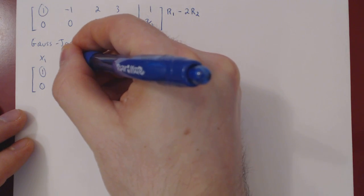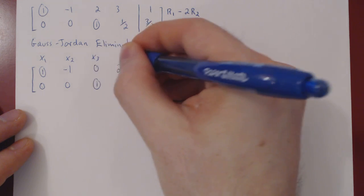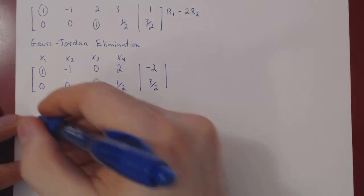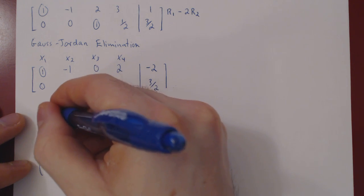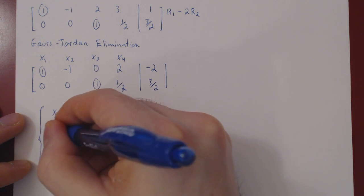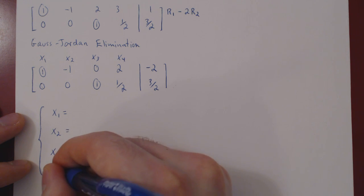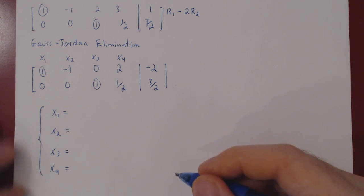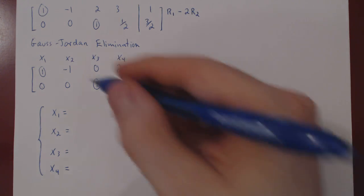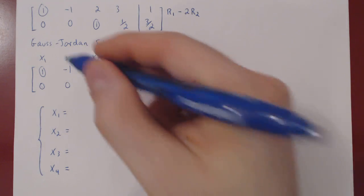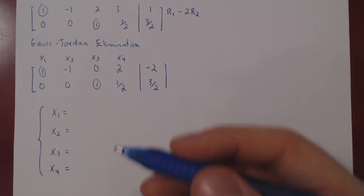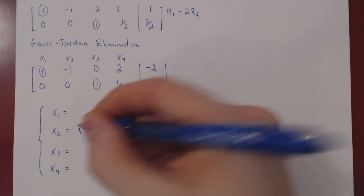The variables were x1, x2, x3, and x4. As always, we hand all the free variables. So x2 is free, so it can take on any real value, it becomes a parameter, so we could say x2 equals r.